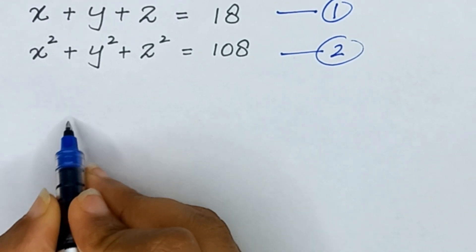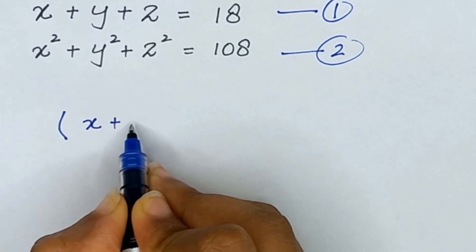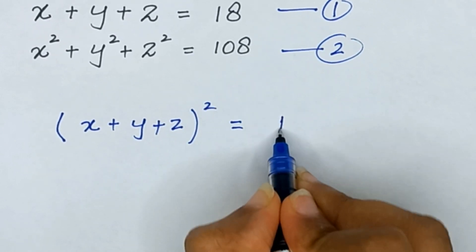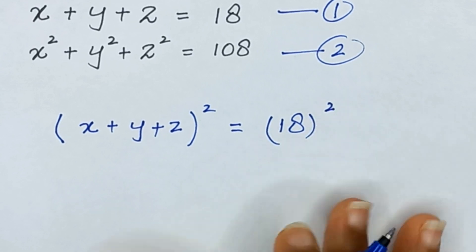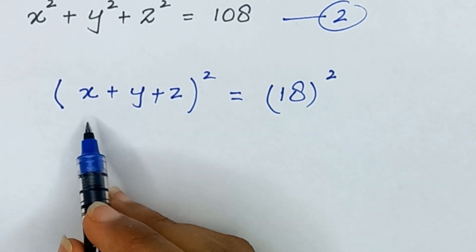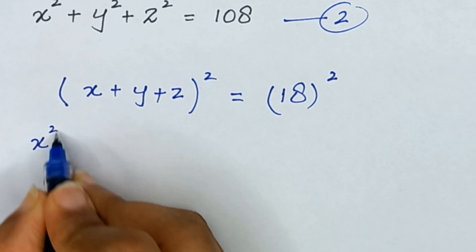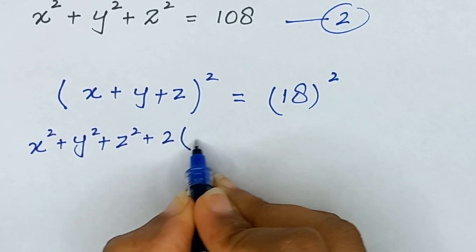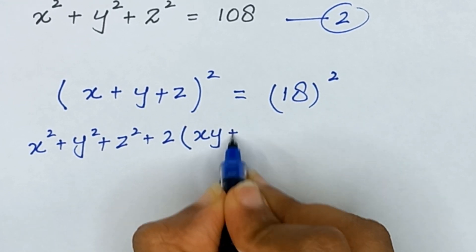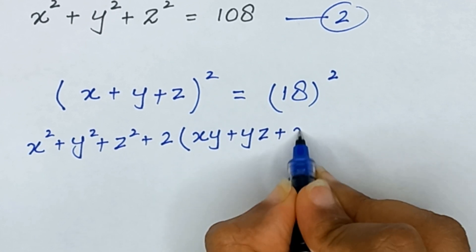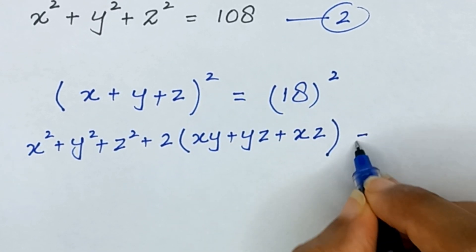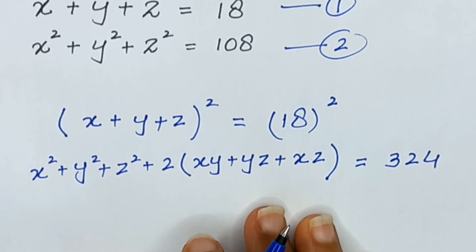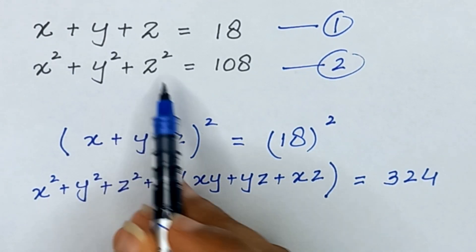First, I will square equation number one: (x plus y plus z)² equals 18². We know that (x plus y plus z)² expands to x² plus y² plus z² plus 2 times (xy plus yz plus xz), and it is equal to 18² which is 324.